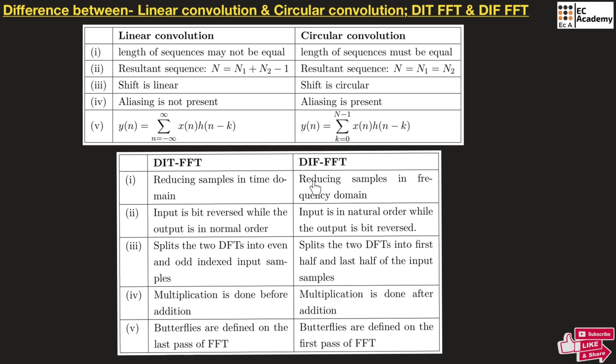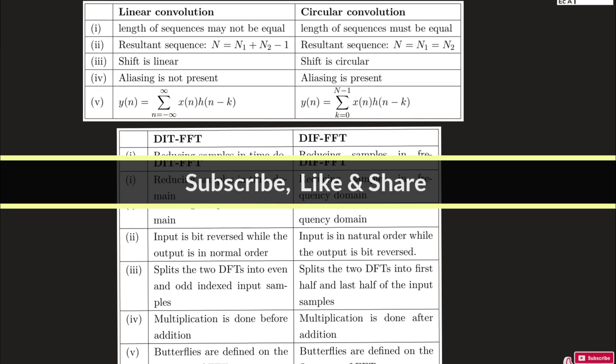In DIF-FFT, we reduce the samples in frequency domain. The input is natural order while the output is bit reversed. It splits the two DFTs into first half and last half of the input samples. The multiplication is done after addition. And finally, the butterflies are defined on the first part of FFT.